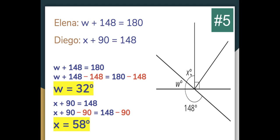Another thing to consider is that W plus X equals 90 degrees, but if we don't know either one individually we can't determine each value separately. That's why we use our knowledge of angle relationships to solve for each piece.